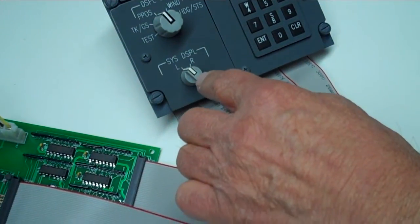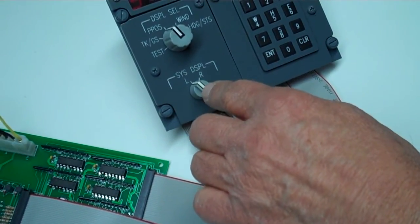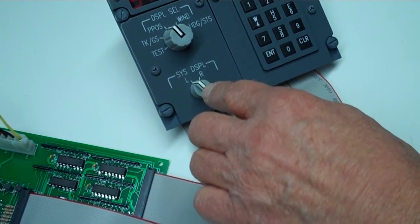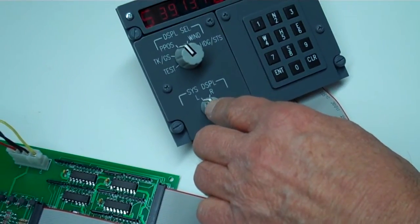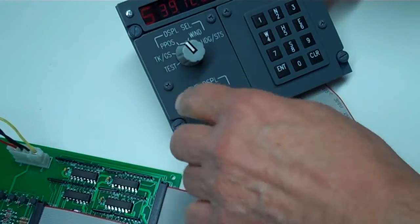The system display left and right, we can't simulate that. There's no data. There are no left and right systems in most simulators. So that's just a switch. It operates, but doesn't do anything.